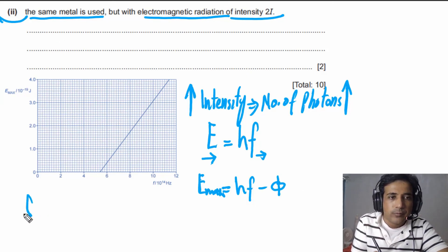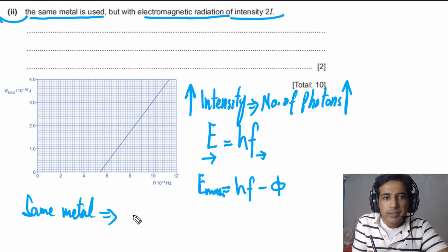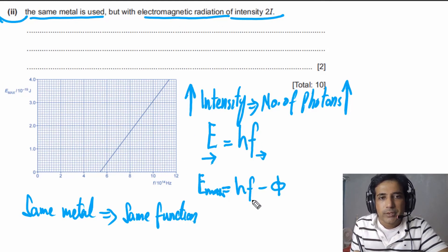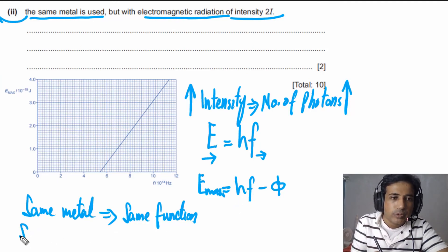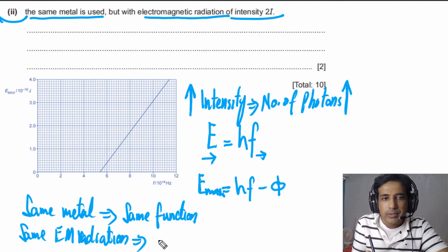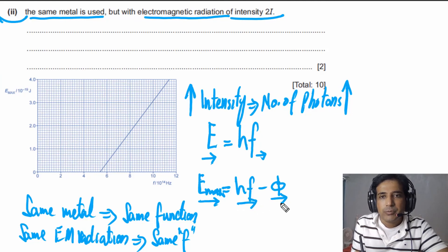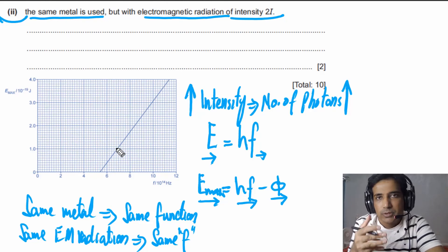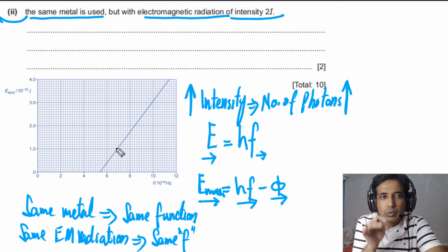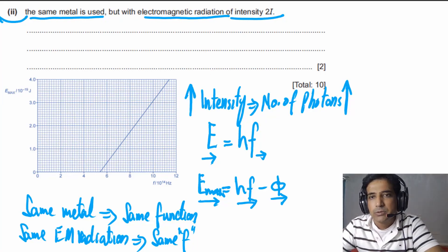Since the metal is the same, the work function is unchanged. Since the electromagnetic radiation is the same, the frequency is the same. Therefore, KEmax = hf − work function remains unchanged. Increasing intensity only increases the number of photons reaching the surface per unit time — there is no change in the graph line.